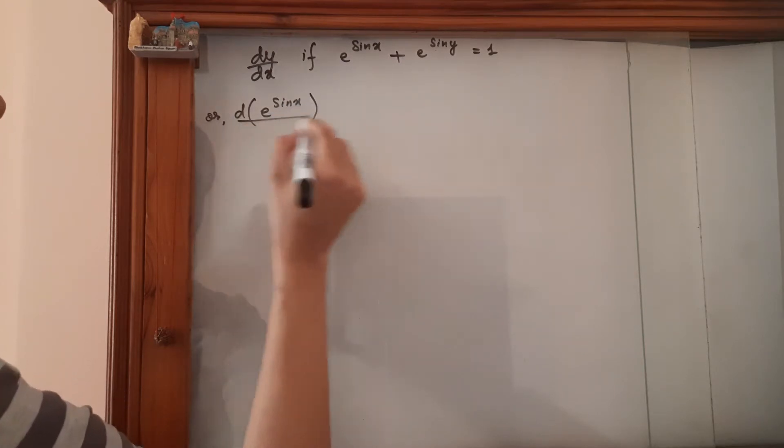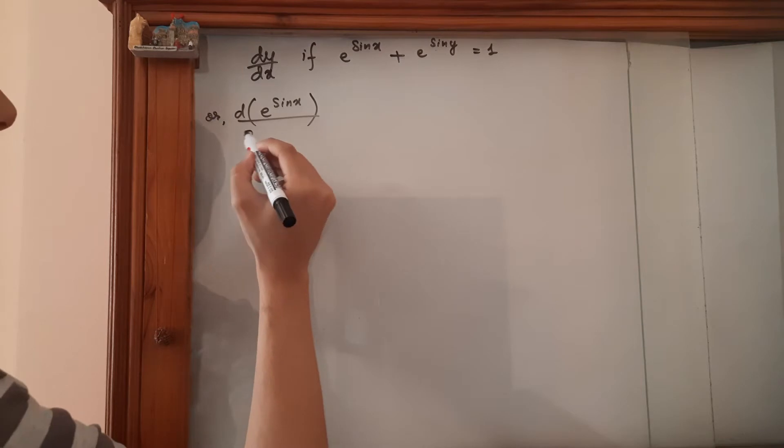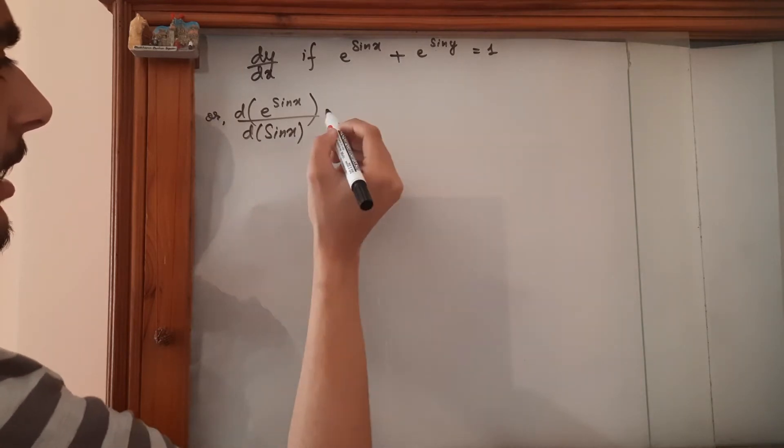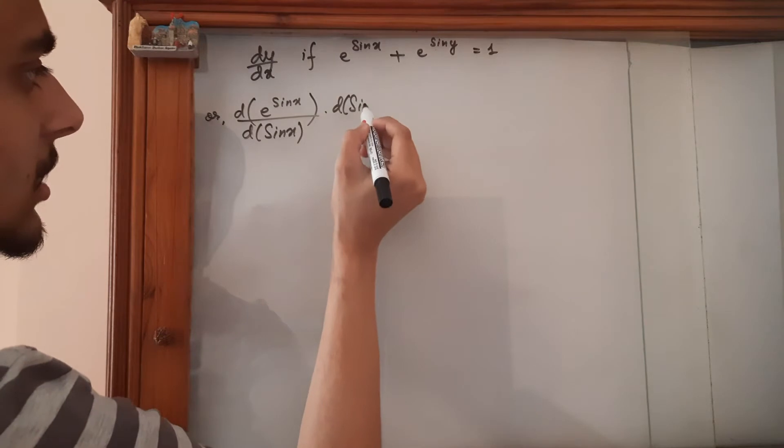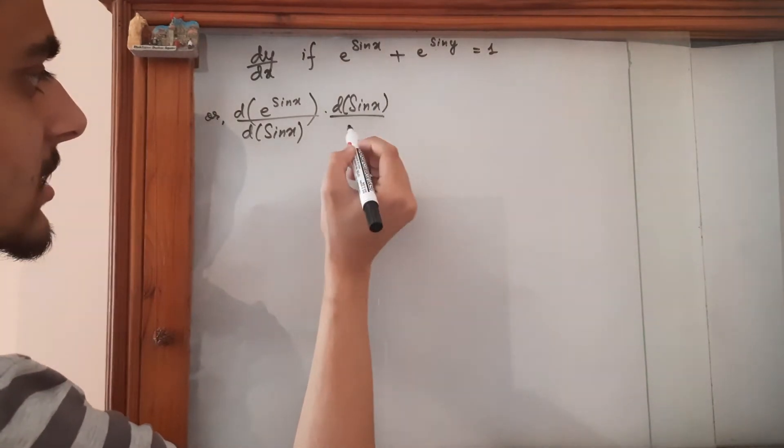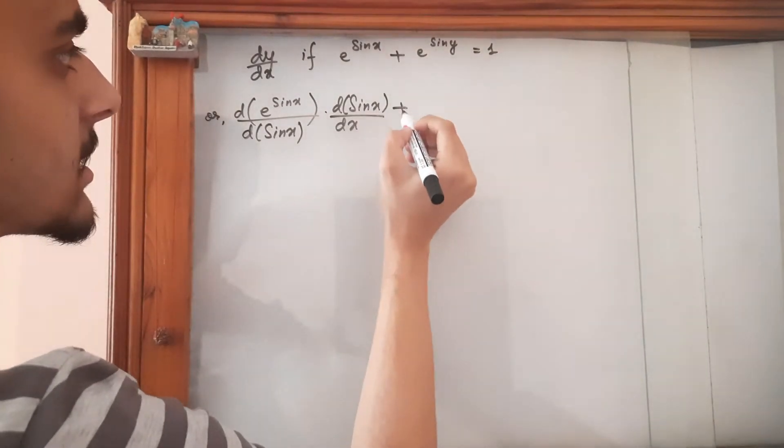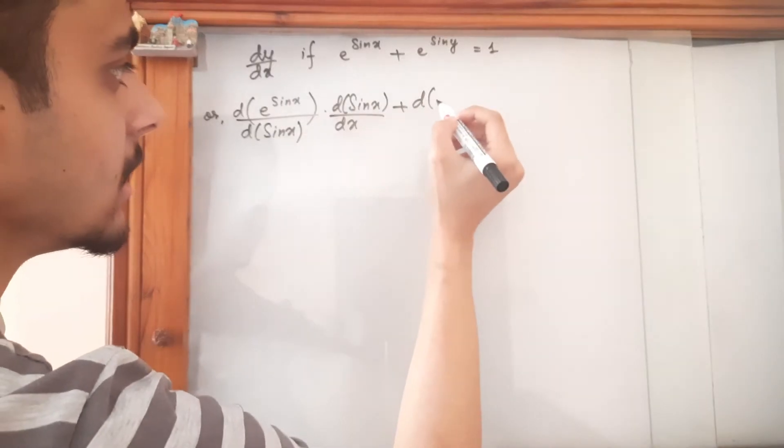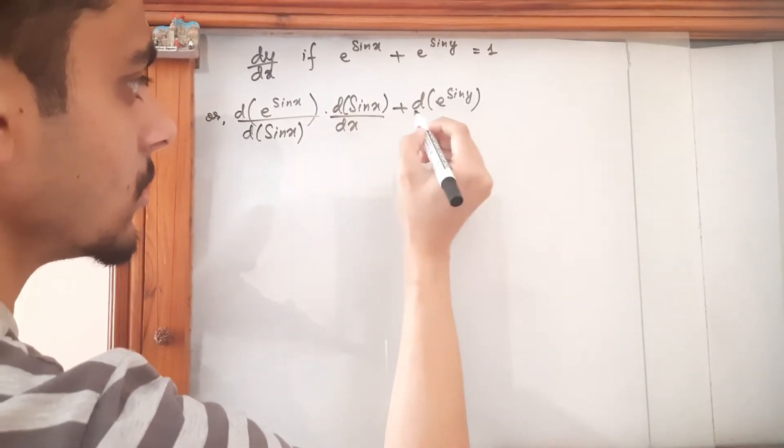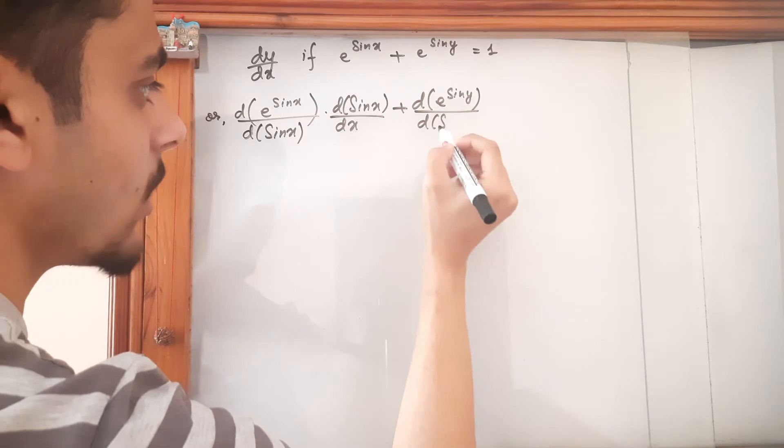we have to apply the chain rule over here so it's going to be with respect to sine x and then sine x with respect to x plus this is going to be with respect to sine y.